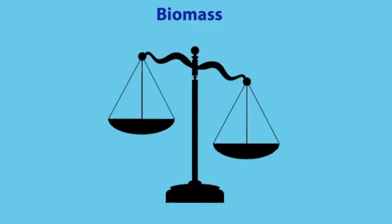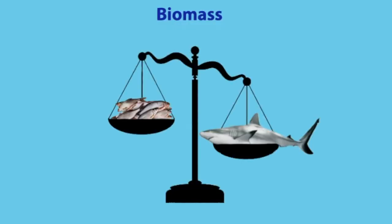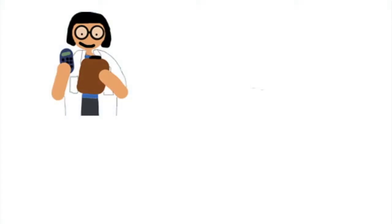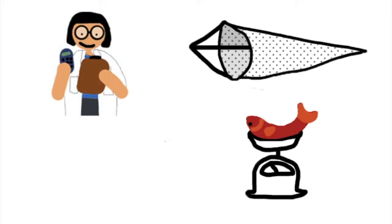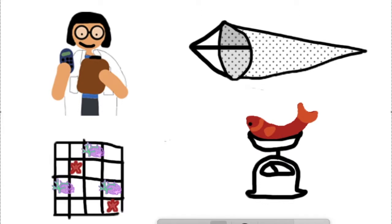First and most simple, biomass is the weight per area of a particular species, or tons per square kilometre. This is relatively simple to measure by counting and weighing samples collected by methods like nets, transects, or quadrants.